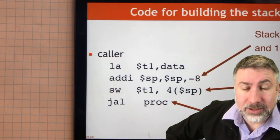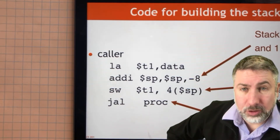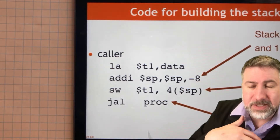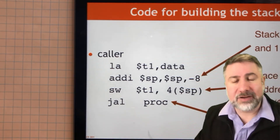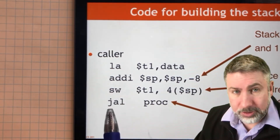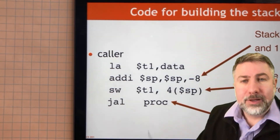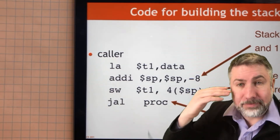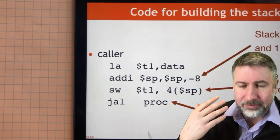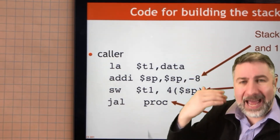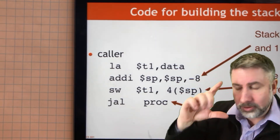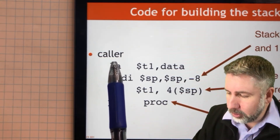Now we're going to look at what this actually looks like in code. We have four different places where we have to write code to specify the setup and breakdown of the stack frame. We're going to do that here before we call the procedure with JAL, then at the beginning of the procedure itself, at the end of the procedure we put the stack frame away again, and then after the JAL in our main caller.